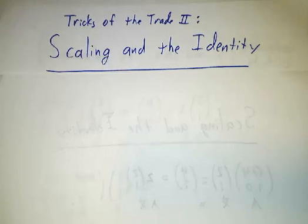In the last video, we talked about how you can use traces and determinants to find eigenvalues and then eigenvectors of matrices. We're gonna extend that by using properties of scaling and the identity.